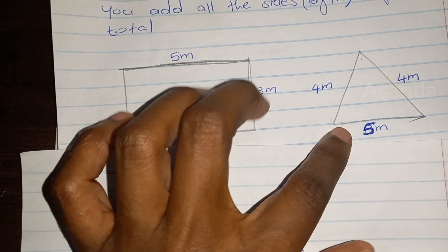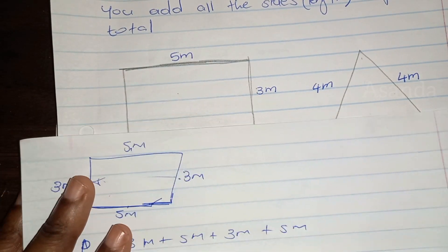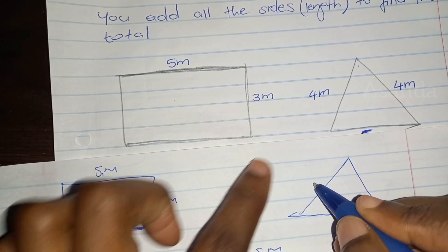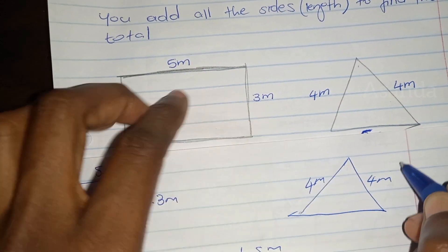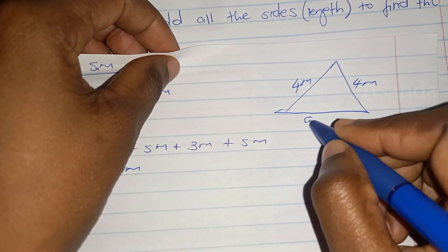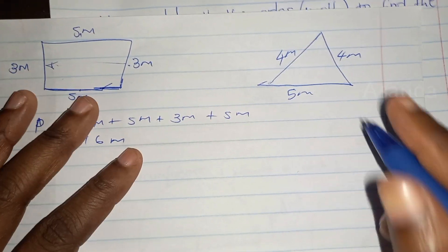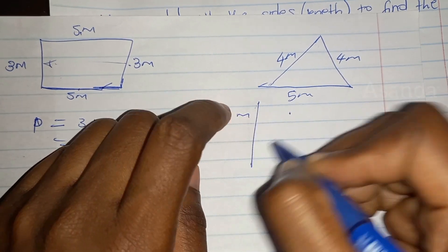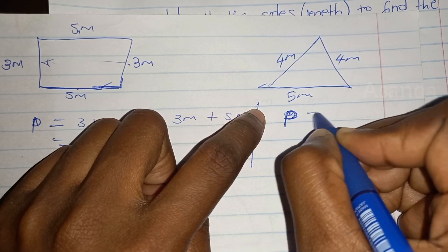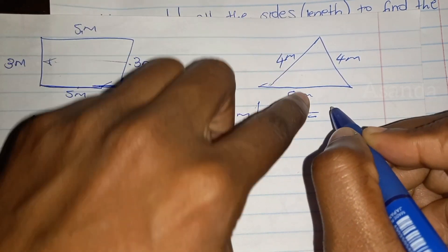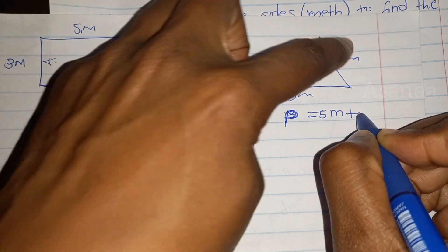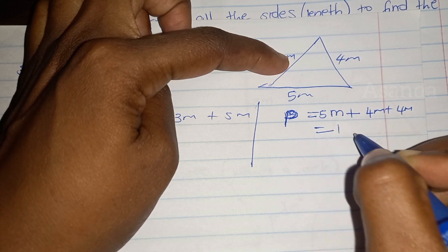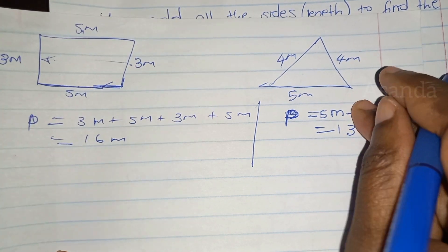Now we're going to do this triangle. This side is four meters, that side is four meters, that side is four meters, and this side is five meters. So the perimeter equals five plus four plus four, which gives us 13 meters.